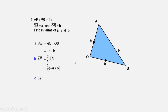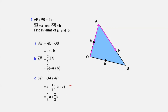Find vector OP = OA + AP. OA = a and AP = (2/3)(−a + b). Expanding: a − (2/3)a + (2/3)b. Taking LCM: (3a − 2a)/3 = (1/3)a. So vector OP = (1/3)a + (2/3)b.